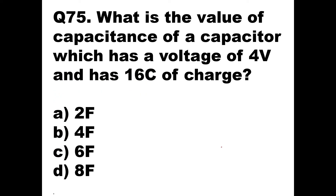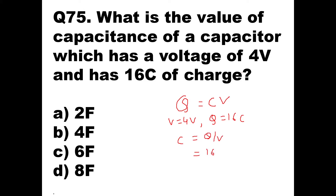Question number 75: What is the value of capacitance of a capacitor which has a voltage of 4 volts and has 16 coulombs of charge? Using the formula Q = CV, capacitance C = Q / V = 16 / 4 = 4 farads. So option B is the right answer: C = 4 farads.